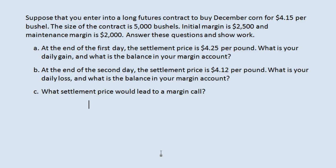Hello everyone, Jeff here with an example of initial margin, maintenance margin, and how your account actually works on a day-to-day basis when you are in a futures contract. In this example you are entering a long futures contract to buy December corn for $4.15 per bushel. The size of the contract is 5,000 bushels. Initial margin is $2,500 and maintenance margin is $2,000. And we have a series of questions.